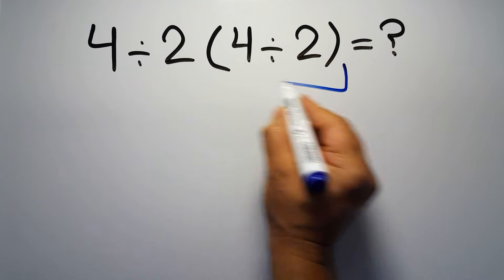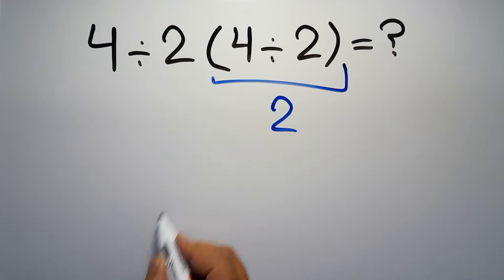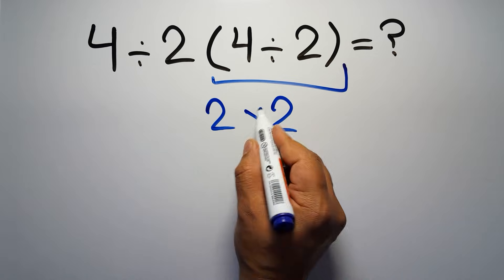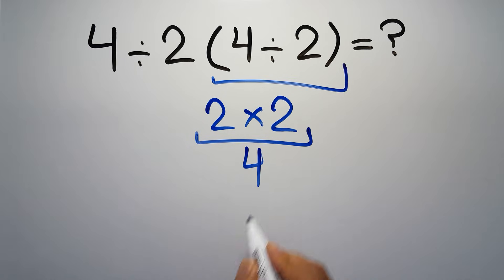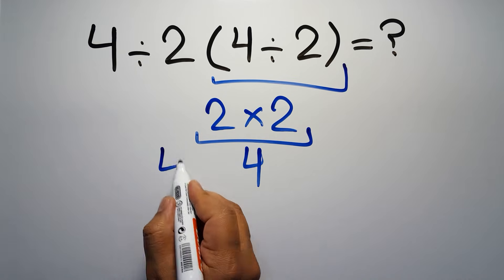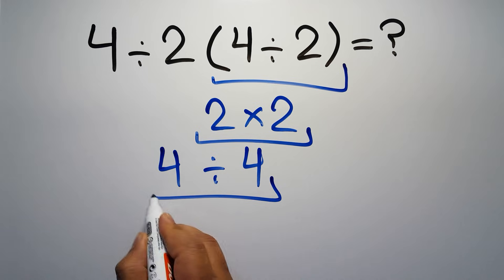4 divided by 2 gives us 2, and 2 times 2 is just 4, so 4 divided by 4 gives us 1. But this answer is not correct.